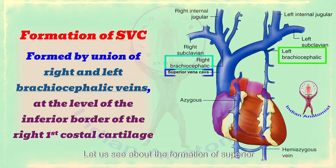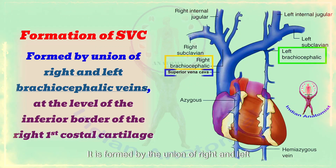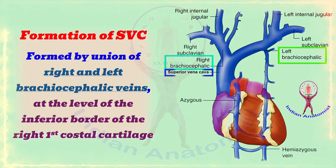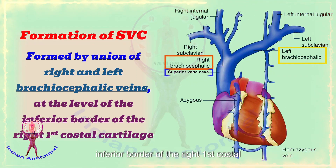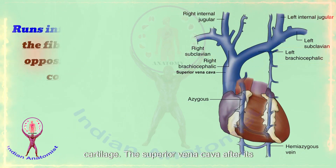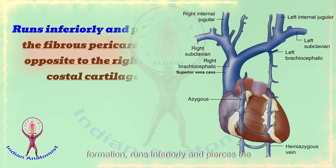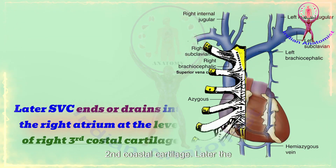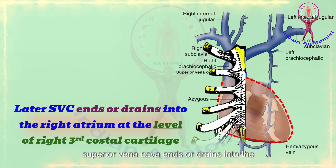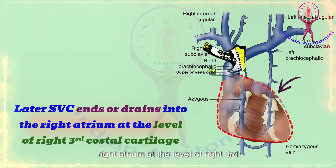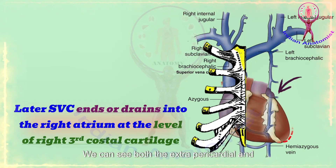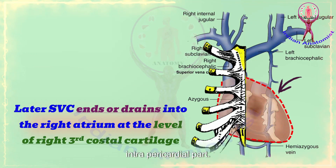The superior vena cava is formed by the union of the right and left brachiocephalic veins at the level of the inferior border of the right first costal cartilage. After its formation, the superior vena cava runs inferiorly and pierces the fibrous pericardium opposite to the right second costal cartilage. The superior vena cava ends or drains into the right atrium at the level of the right third costal cartilage. In this picture, we can see both the extrapericardial and intrapericardial parts.